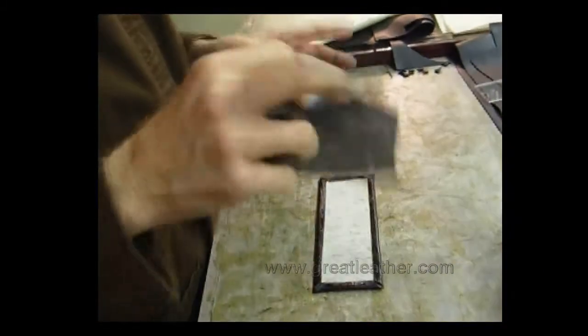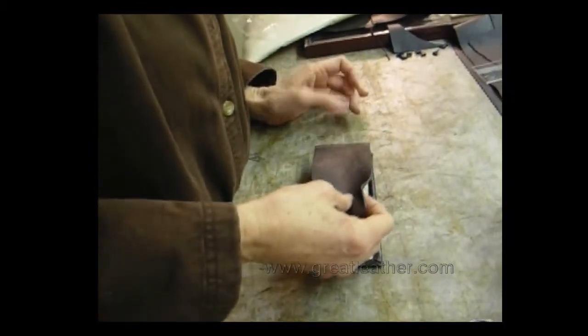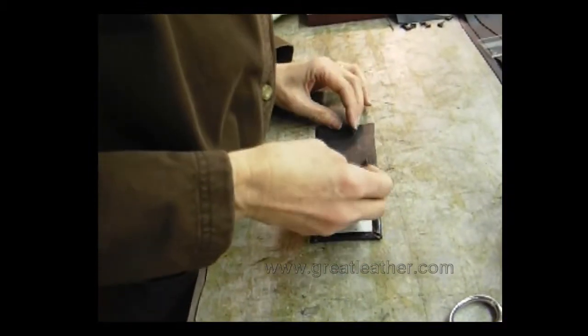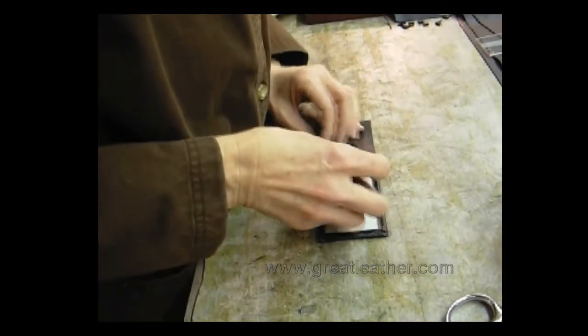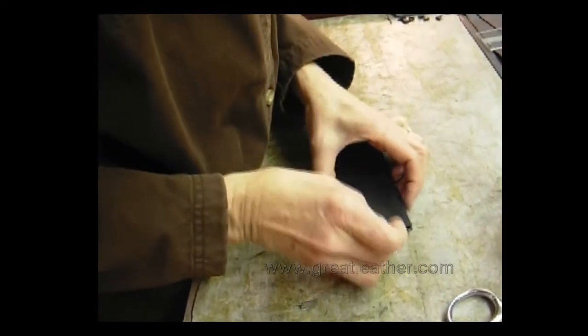The trick is to getting these cut perfectly and folded in perfectly so you can glue it on here without having to trim it off and that it lines up without sticking out or running too short so that when you top stitch it, you don't catch it.